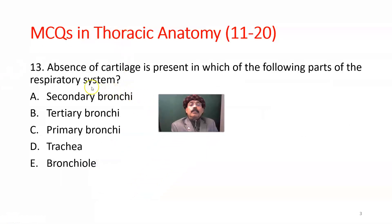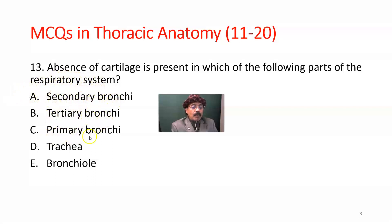Here is another question. Absence of cartilage is present in which of the following parts of the respiratory system? Hyaline cartilage is present in the respiratory passage. Where is it absent? The options are secondary bronchi, tertiary bronchi, primary bronchi, trachea, and bronchioles. All of them have cartilage except bronchioles — bronchioles have no cartilage.